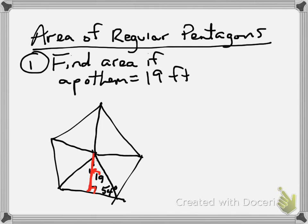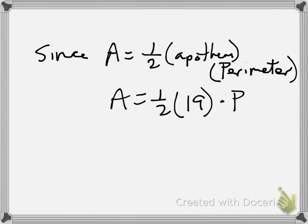This angle is 54, we'll get more into how to find that angle later. For right now, what you need to know is that this angle is always going to be 54. Because our area formula is one half times the apothem times the perimeter.